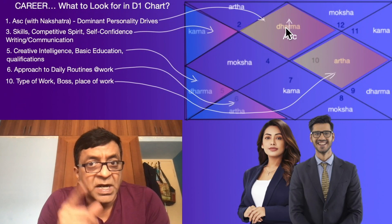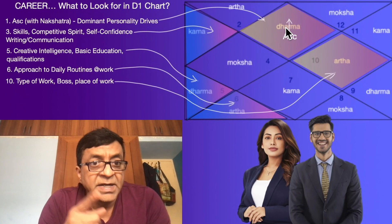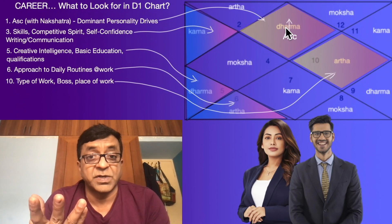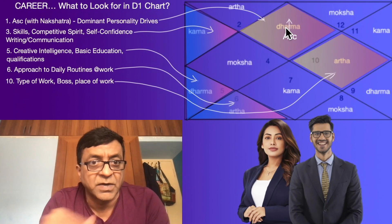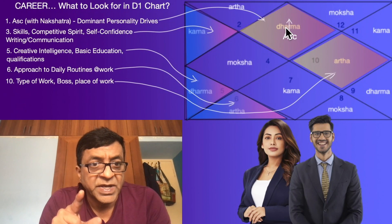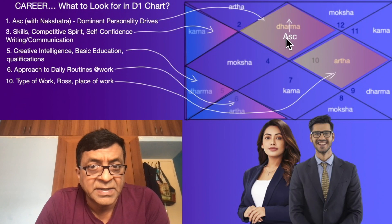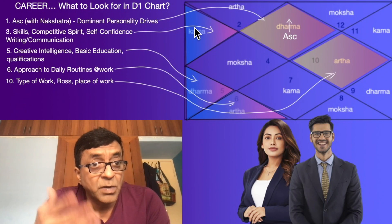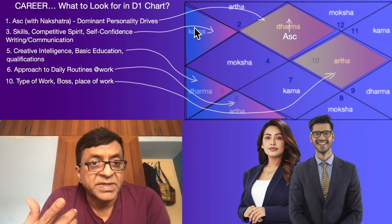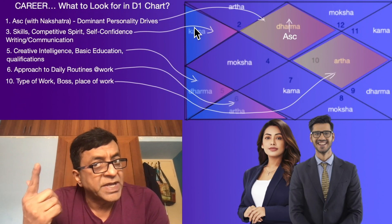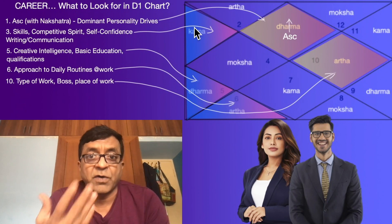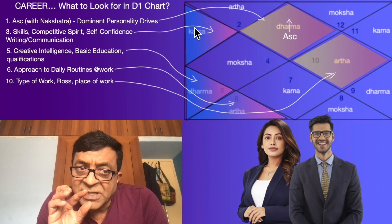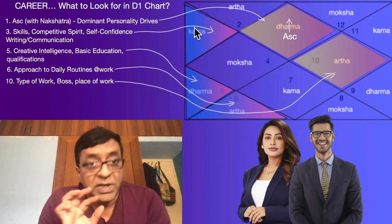In the D1 natal birth chart, I have highlighted those areas you will focus on to understand talents and abilities. The ascendant with its nakshatra gives you the sign energy and the color of your personality — your dominant personality drive — and this carries to every area of your life. House number three in the natal chart gives you skills, competitive spirit, self-confidence, and writing and communication. These are the key career-relevant attributes of the third house.